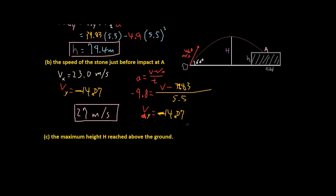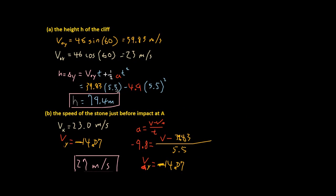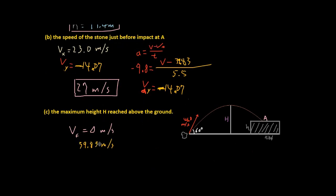Okay, and then the maximum height — how do we calculate the maximum height? Well, this is just going to be when v_fy is equal to zero meters per second. So we're just going to set v_fy equals zero and calculate our time — how long it takes to reach zero. Let me bring our initial speed down. This is our initial speed.